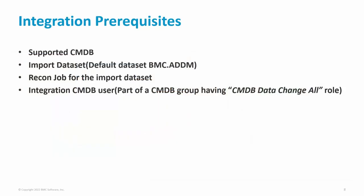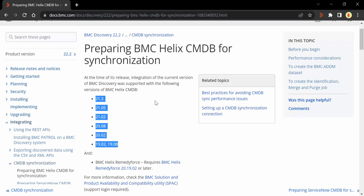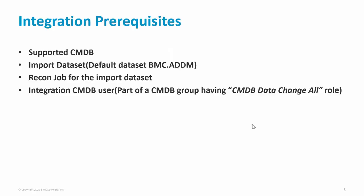Let's start with the prerequisites for this integration. First of all, you will need a supported CMDB. The list of all supported BMC Helix CMDBs is documented in BMC Discovery documentation. All BMC Helix CMDB comes with a default import data set named BMC.ADDM which can be used to sync data from BMC Discovery. Though the import data set BMC.ADDM is available by default, you would still need to configure a recon job for this particular data set. Next, you would need a CMDB user for this integration. This user should at least be part of a CMDB group which has the CMDB data change all role.